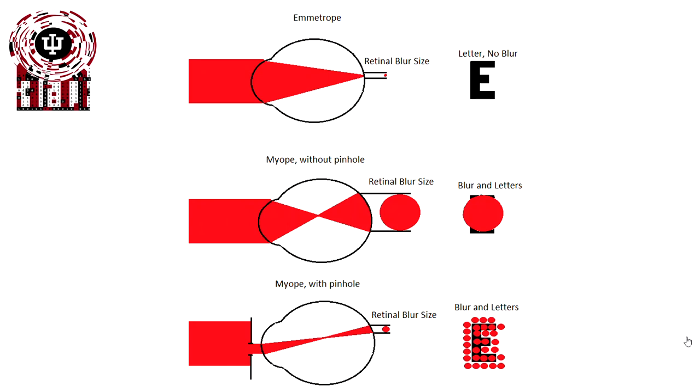However, once we have myopia without a pinhole, we have a focal position in front of the retina, and this leaves a larger blur circle on the retina. This larger blur circle prevents us from resolving that E because it's actually larger than the letter itself.